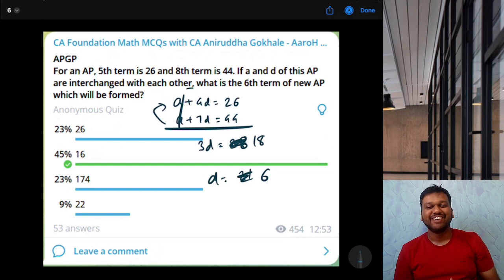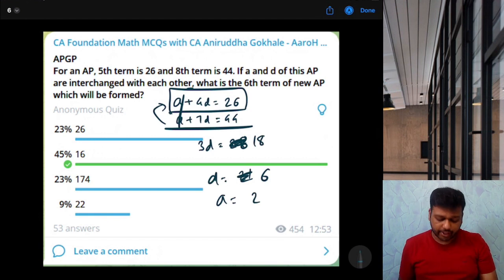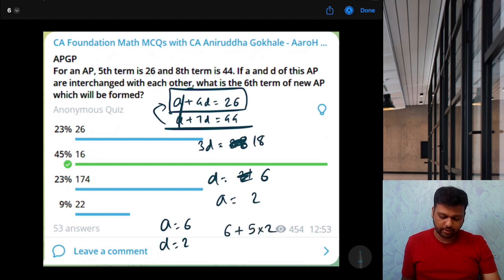So, a will be what? Let's put d in this. So, 4d is 4 into 6, 24. So, if we get that to right-hand side, a will be 26 minus 24, that is 2. So, d is 6, a is 2, now we want to interchange this. For the new AP, we want a as 6 and d as 2. Now, what is the sixth term? Sixth term will be a plus n minus 1 into d, so that is 16, B is the correct answer.